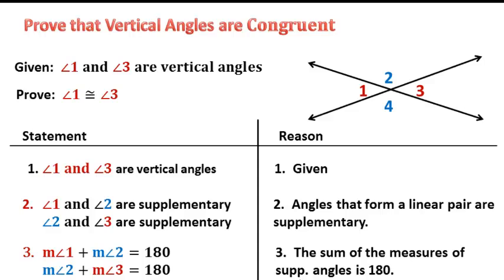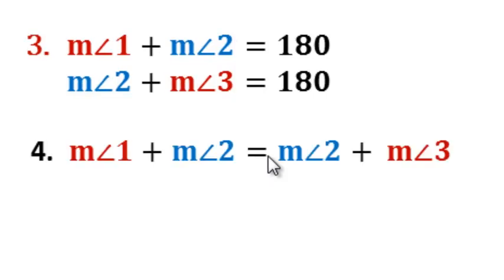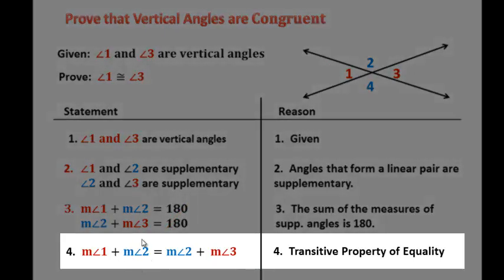I did this because the sum of the measures of supplementary angles is 180. Now take a look: both of these expressions are equal to 180, so if they are equal to 180, they are equal to each other — and that is specifically the transitive property. What I've done is made this line equal to this line right here, and then eliminated the 180s.